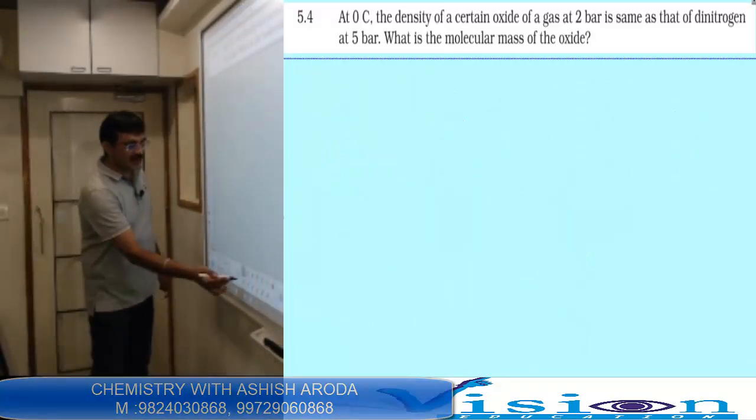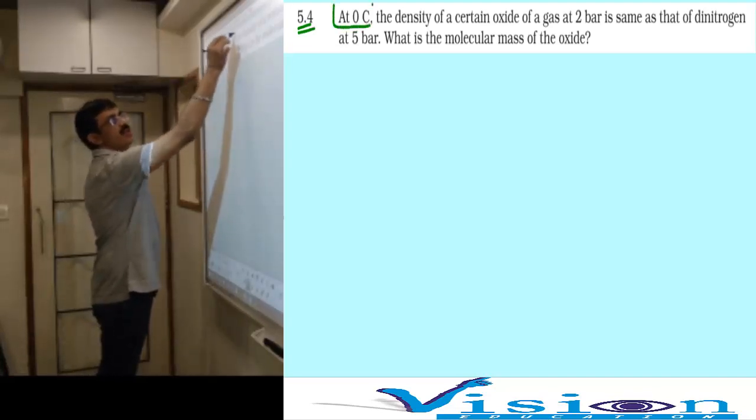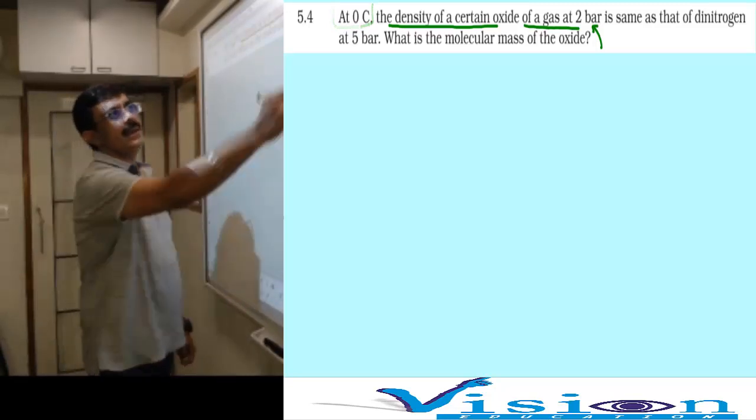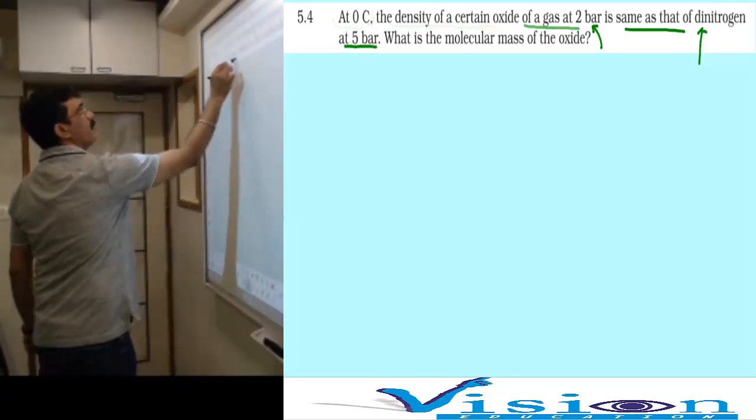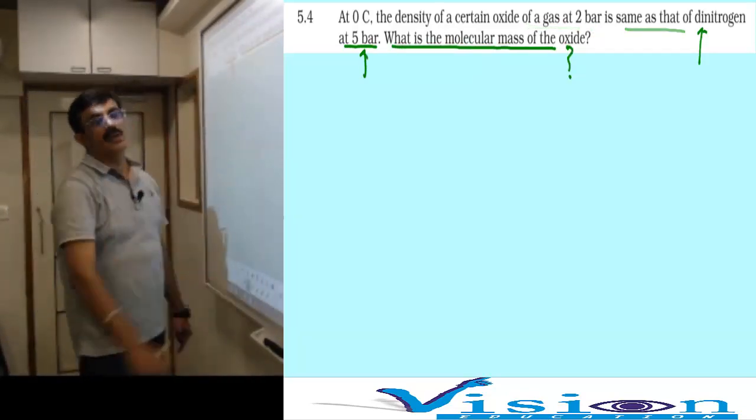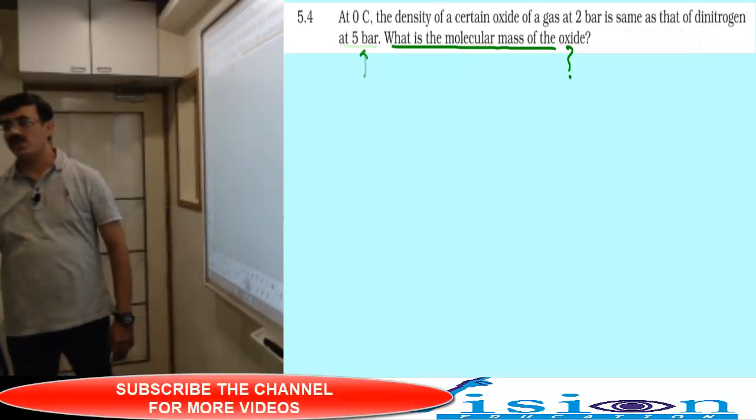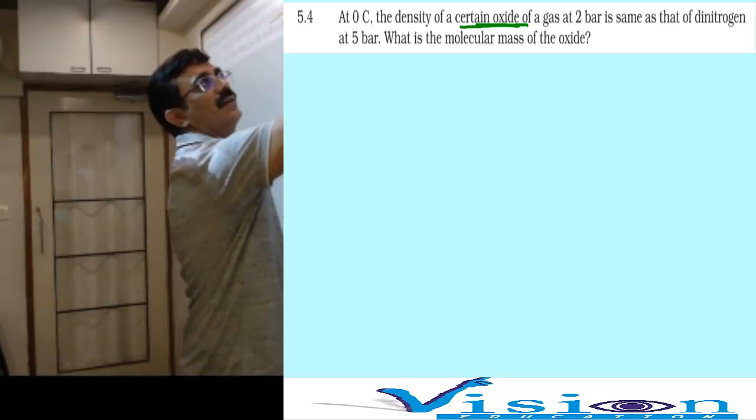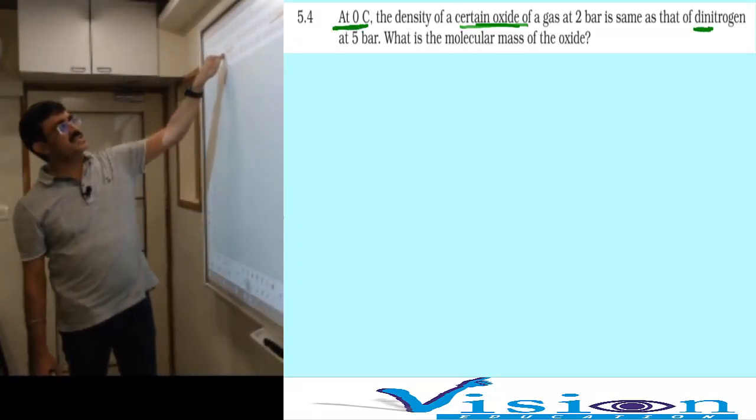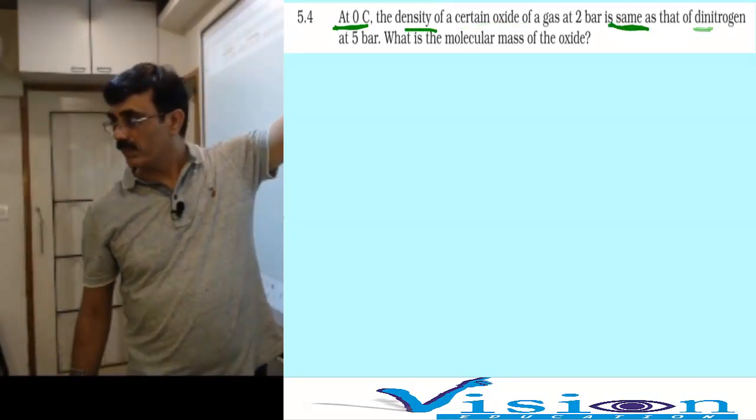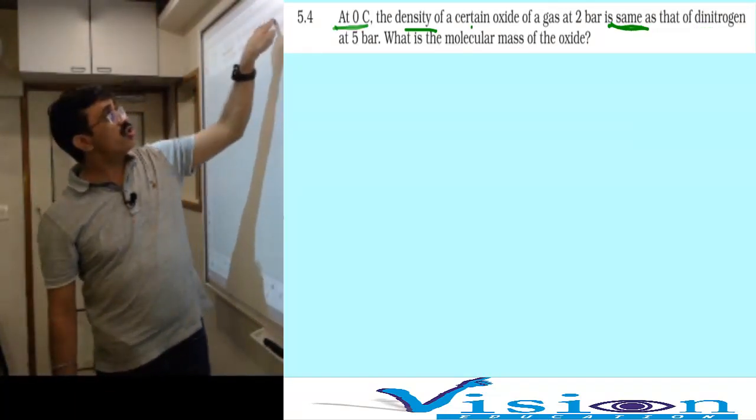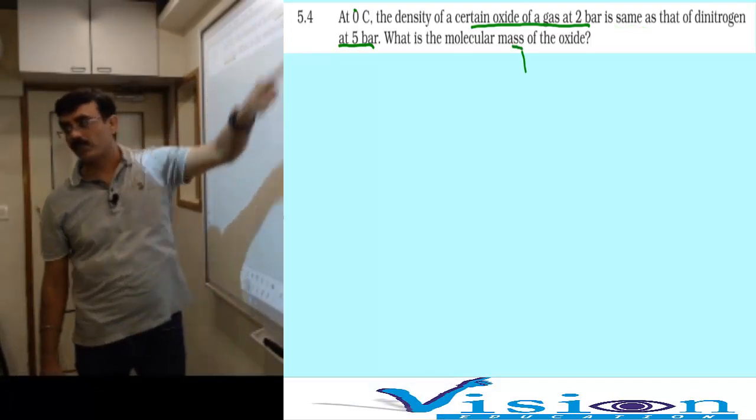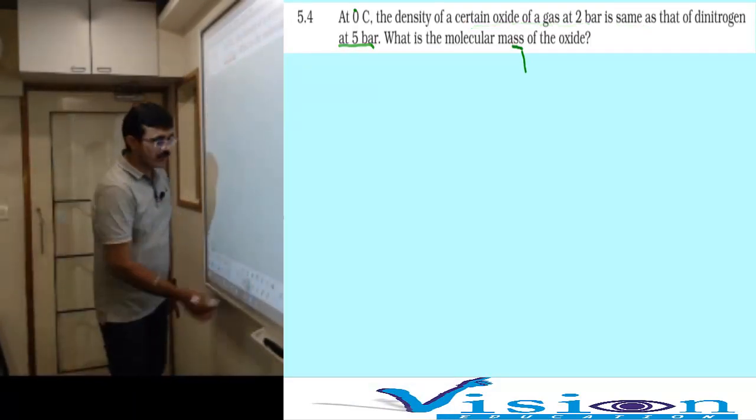We have one more question from your textbook, that's from exercise 5.4. At 0 degree Celsius, the density of a certain oxide of a gas at 2 bar is same as that of dinitrogen at 5 bar. What is the molecular mass of that particular oxide? Let's understand this question.